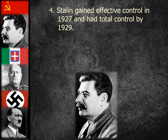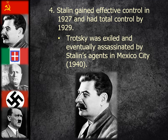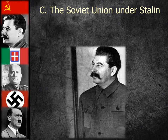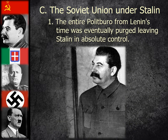Trotsky was exiled by Stalin and eventually assassinated by Stalin's agents while living in Mexico City in 1940 — Stalin had him hacked to death with an axe. The entire Politburo from Lenin's time was eventually purged, leaving Stalin in absolute control. He did not want anyone who might be seen as a threat. He would cozy up to them long enough to gain their support for his leadership, then eliminate them one by one so they couldn't challenge him.